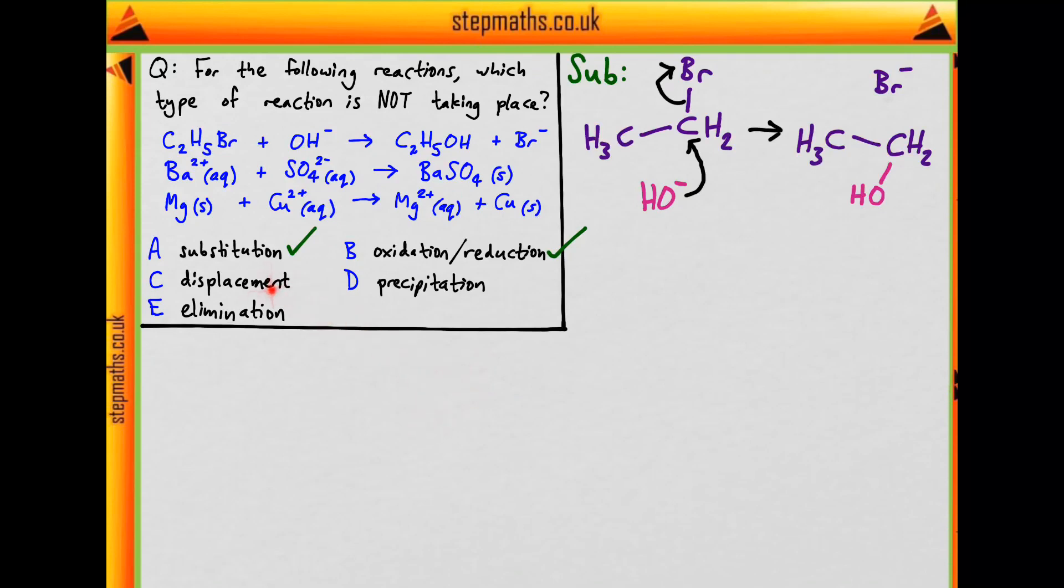Then what about displacement? Now, what is displacement? There's something along the lines of, generally, A plus BC forms AB and C. In other words, A reacts with a molecule of BC to kick out C. Does this happen at all?